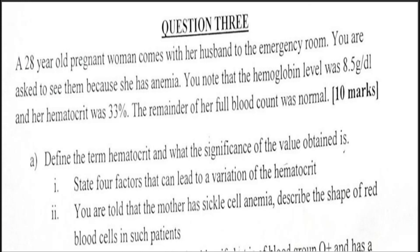Number one: this is our scenario. A 28-year-old woman comes with her husband to the emergency room. You are asked to see them because she has anemia. You note that the hemoglobin level was 8.5 grams per deciliter and her hematocrit is 33 percent. The remainder of her full blood count was normal. The question is: define the term hematocrit and the significance of the value obtained.